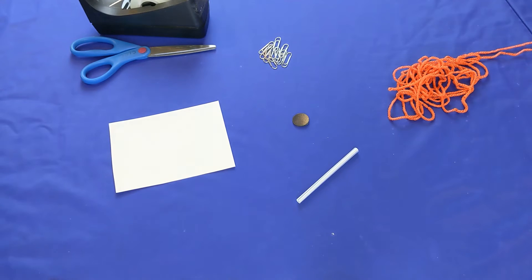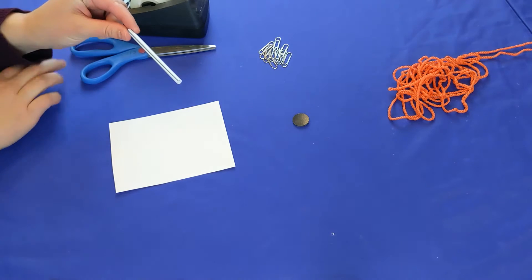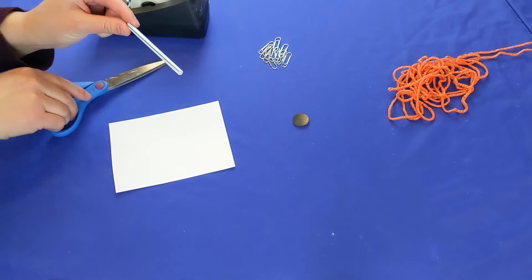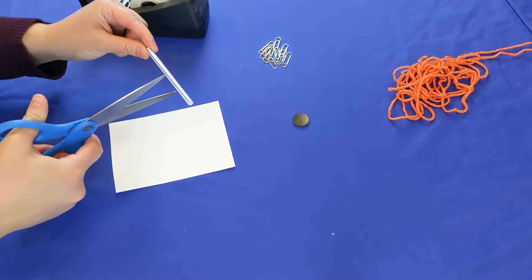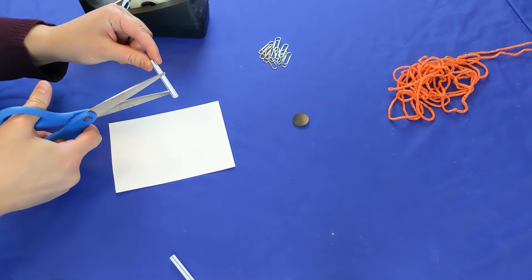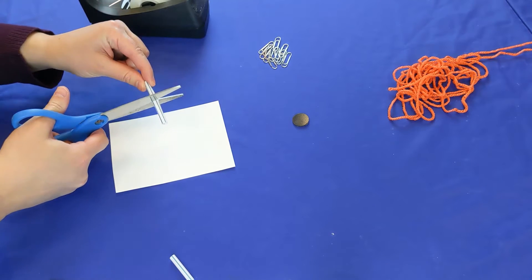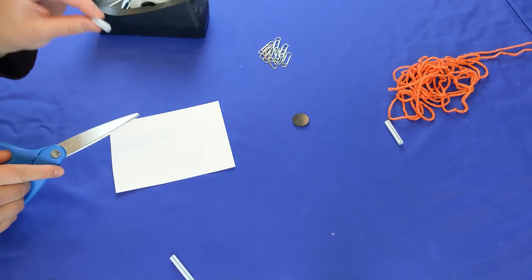The first step is to take your straw and cut two pieces of straw out of it. You want each piece to be about one to two inches long. I'm going to cut off one piece of straw and cut a second piece here, so you'll have a little bit of straw left over that you won't need anymore.